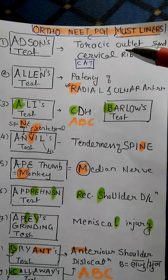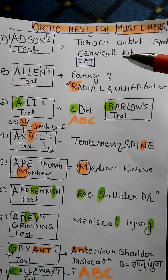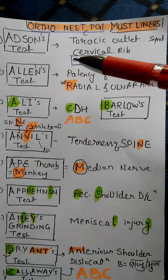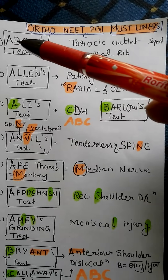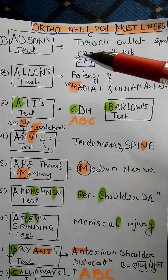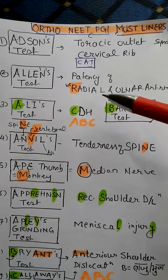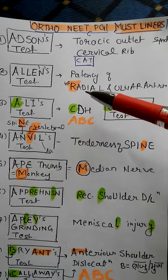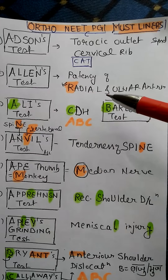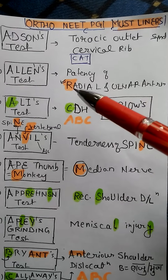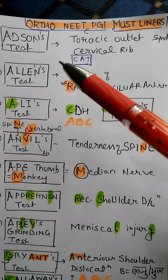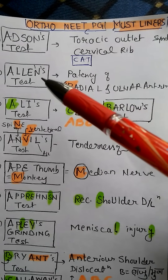Adson's test is used for thoracic outlet syndrome or cervical rib — I remember this as C-A-T: CAT. Then Allen's test is used for the patency of radial and ulnar arteries. How I remember this: LN is a coaching institute for PMT in Kota, Rajasthan.